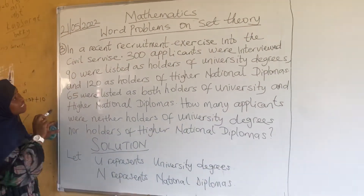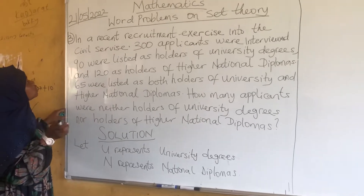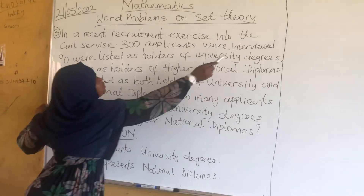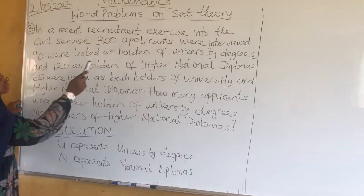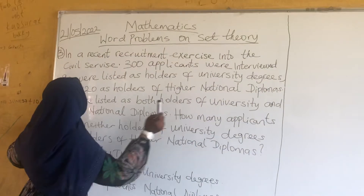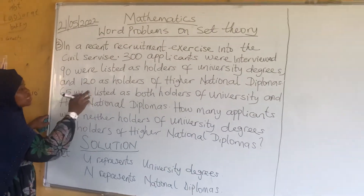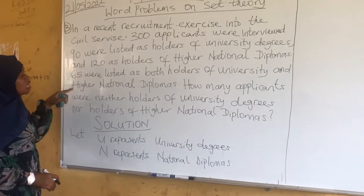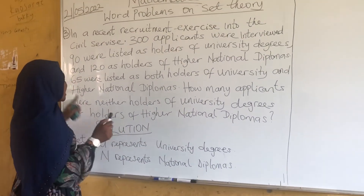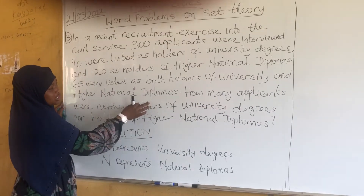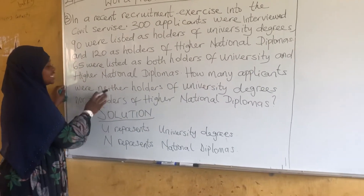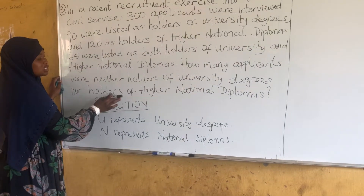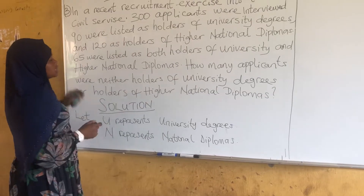Example 3: In a recent recruitment exercise into the civil service, 300 applicants were interviewed. 90 were listed as holders of university degrees and 120 had holders of higher national diplomas. 65 were listed as both holders of university and higher national diplomas. How many applicants were neither holders of university degrees nor holders of higher national diplomas?